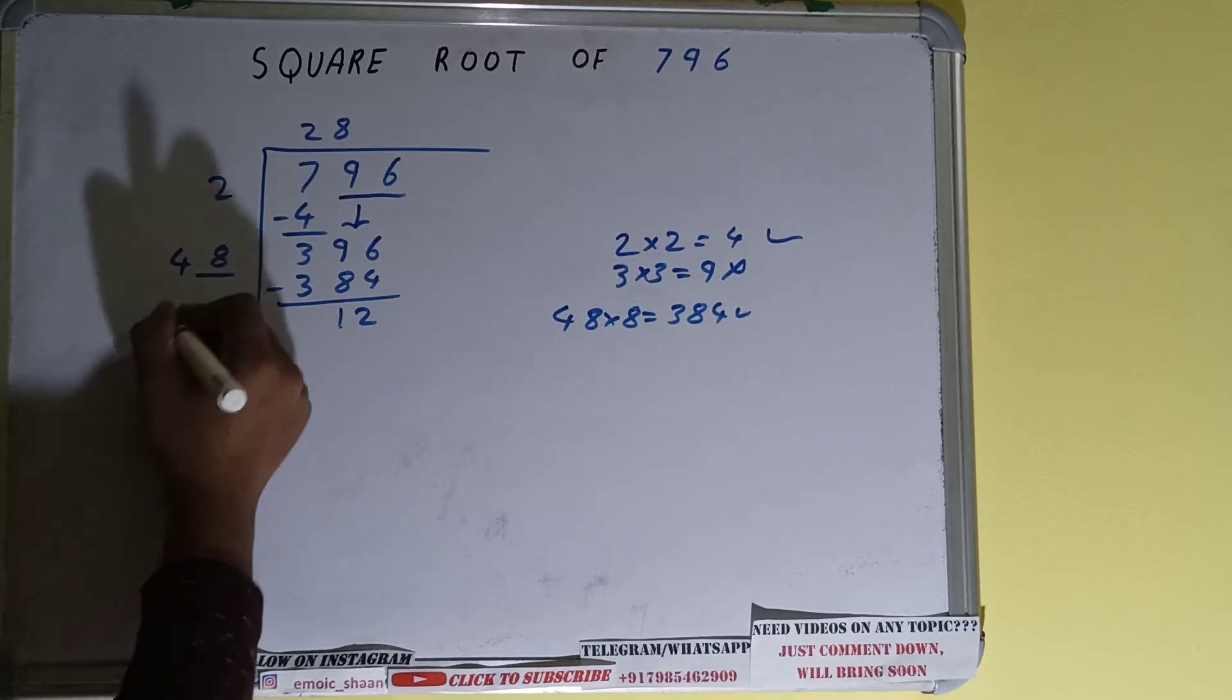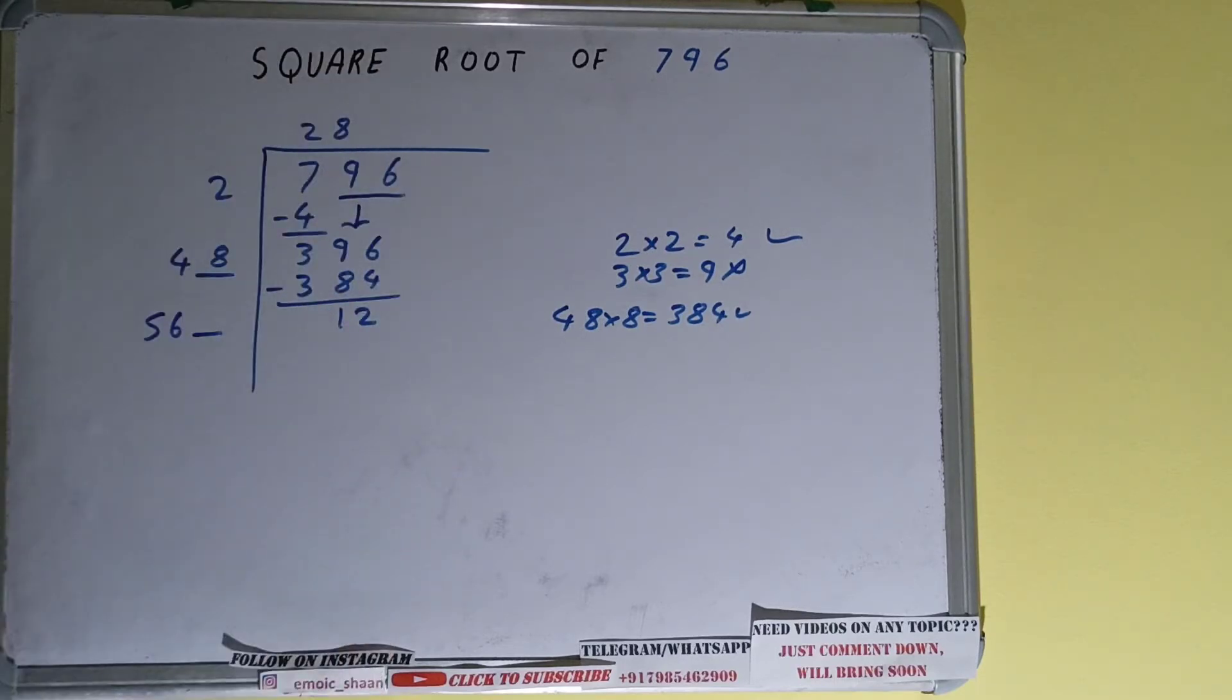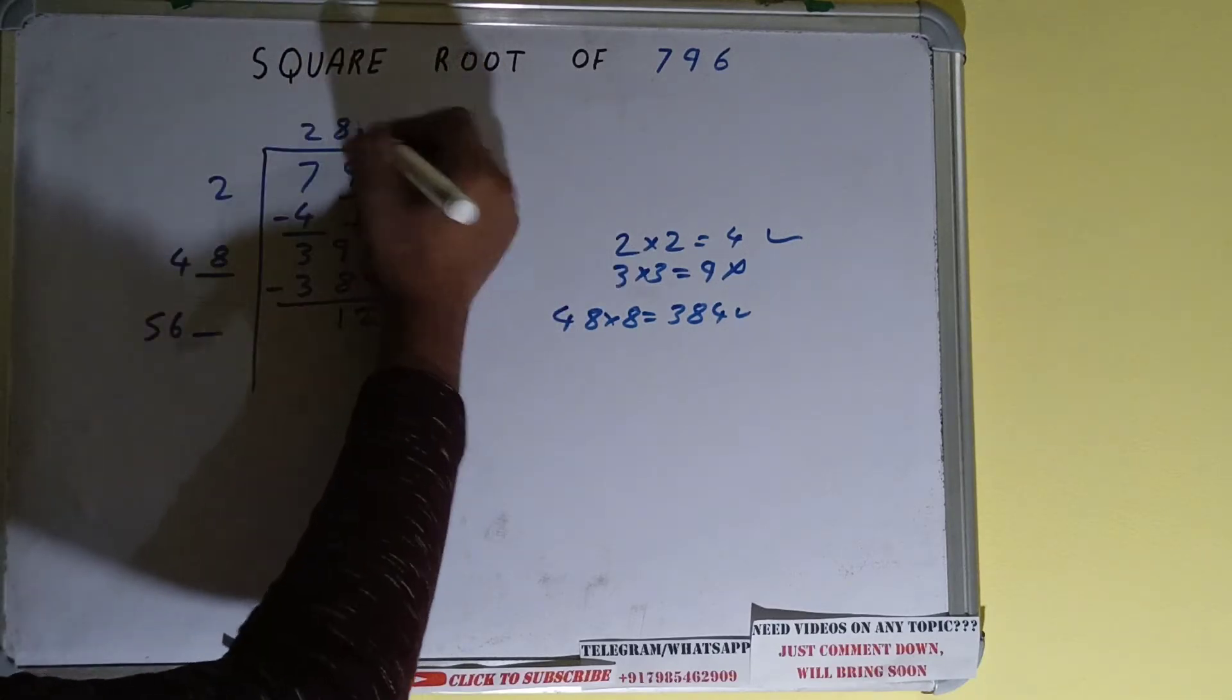So 48 plus 8 will be 56 and one digit extra. This number we need to make it big, but we don't have more pairs over here. So we'll put a decimal. Once we put decimal, we can bring down pairs of zeros.